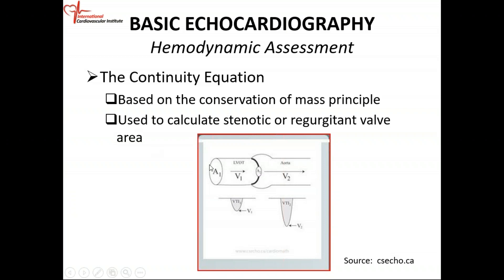If you want to get the flow through this tube, all you need to do is get the cross-sectional area right here and the velocity. If it's a closed system, it's going to be the same flow through this restricted area. And the flow at this restricted area is equal to the cross-sectional area times the velocity.